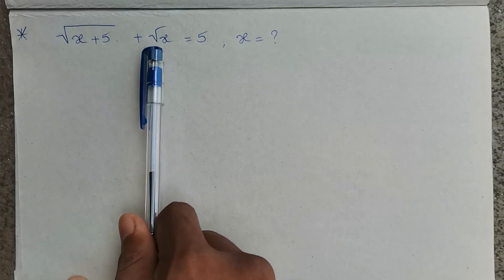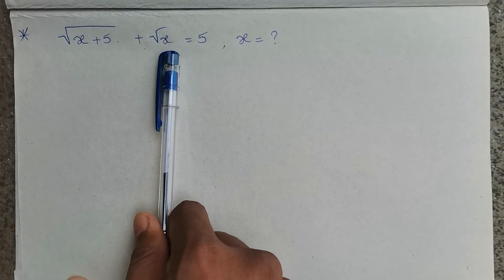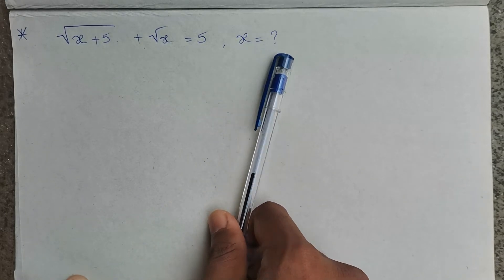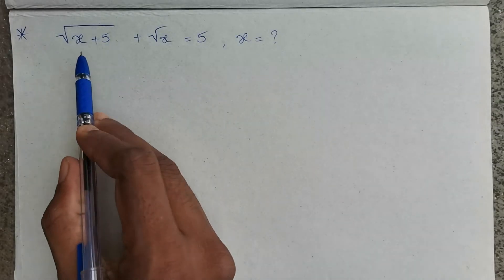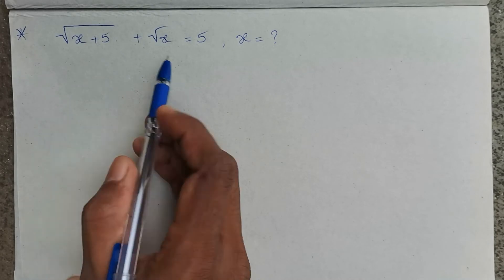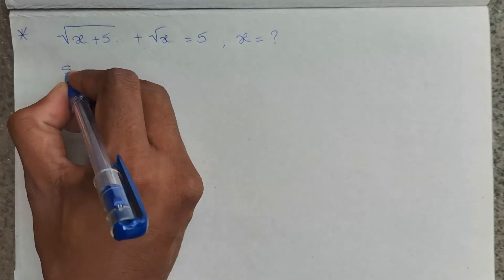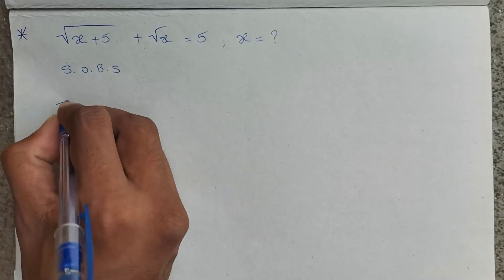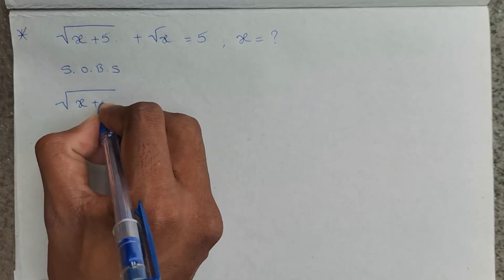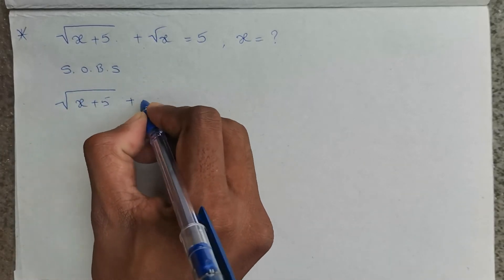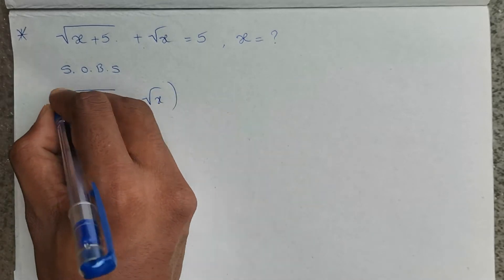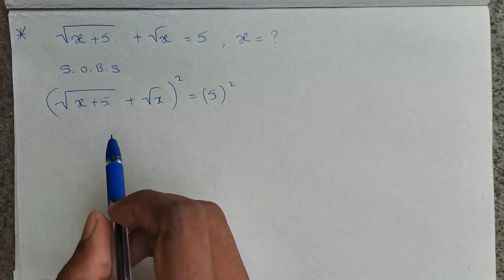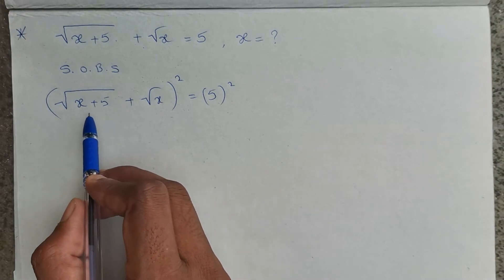Root x plus 5, plus root x equals 5. Find the value of x. To remove the square roots, I will do squaring on both sides, so we get the quantity root x plus 5 plus root x, whole square, equals 5 squared.